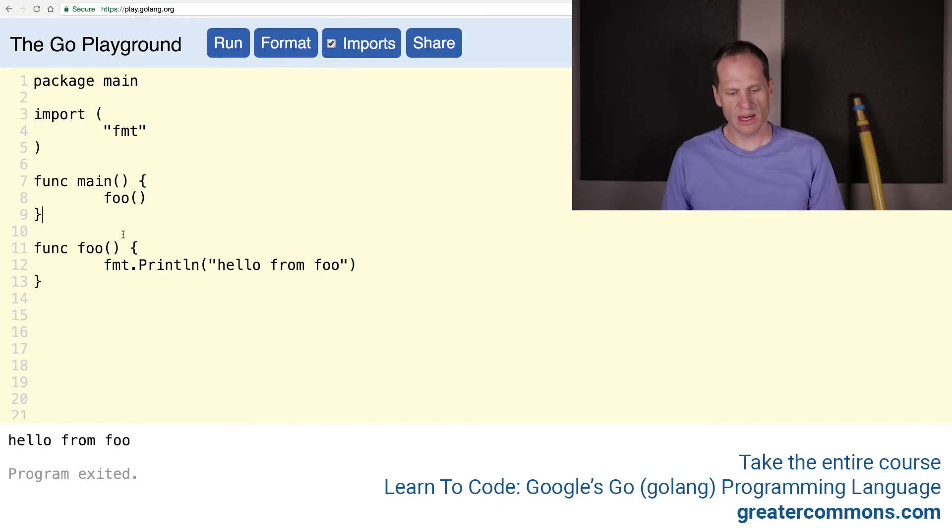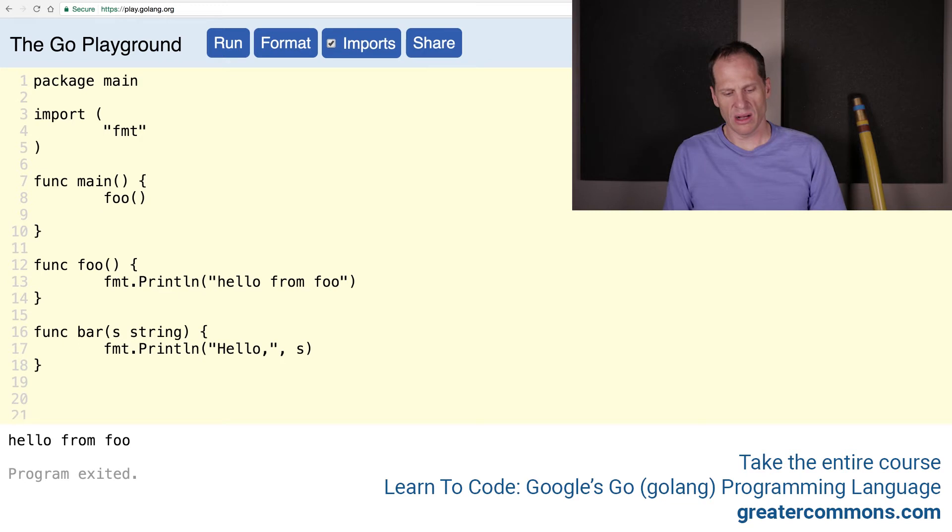Now let's create another func. So I'm just going to copy this. Func bar. This one is going to take in a string, and we'll print out something: Hello, s. That's going to print out. So now when we call bar, we're going to pass in an argument. We're passing in a string. Format it and run it.